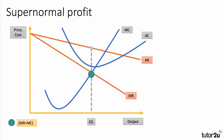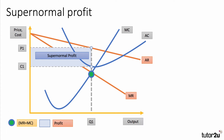Here's a downward sloping demand curve for a firm in imperfect competition. The profit maximizing output is Q1 and the price the firm can charge is P1 using the demand curve. Using the average cost curve, the cost per unit is C1. Because price P1 is greater than cost per unit C1, this firm is making abnormal or supernormal profit, shown by the shaded area — it's the profit per unit (P1 minus C1) multiplied by the quantity Q1. That shaded area in blue is the total supernormal profit.